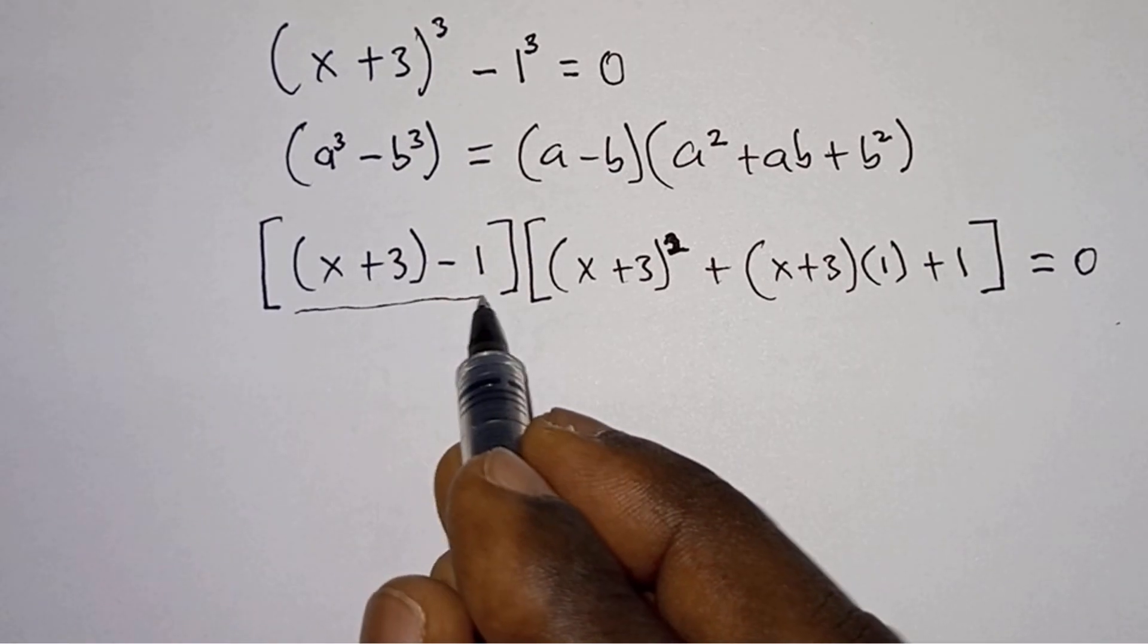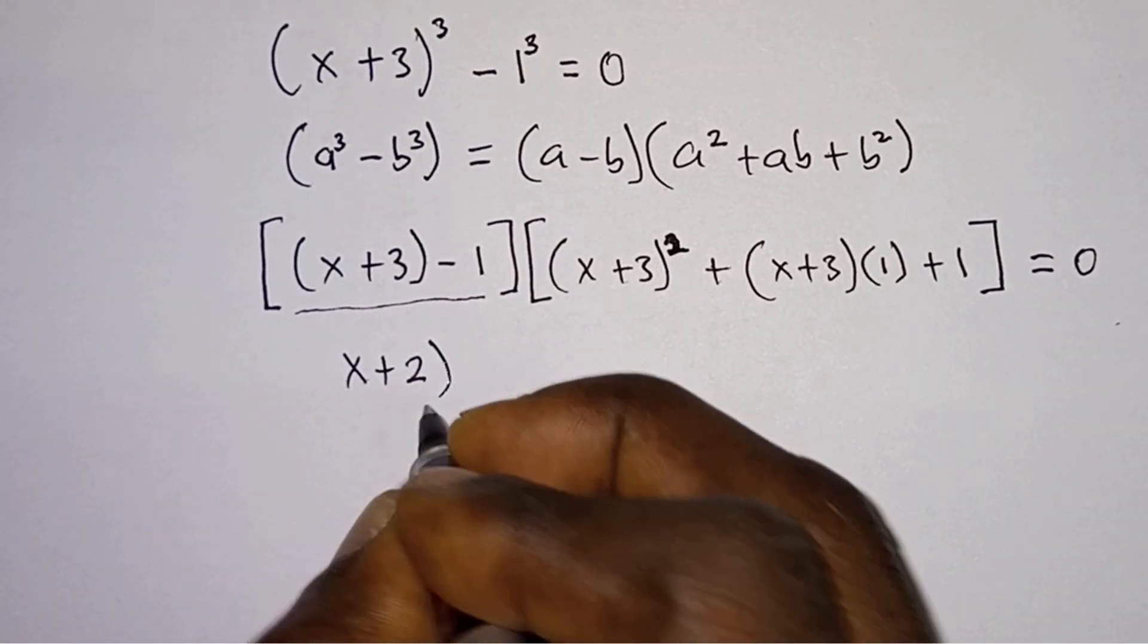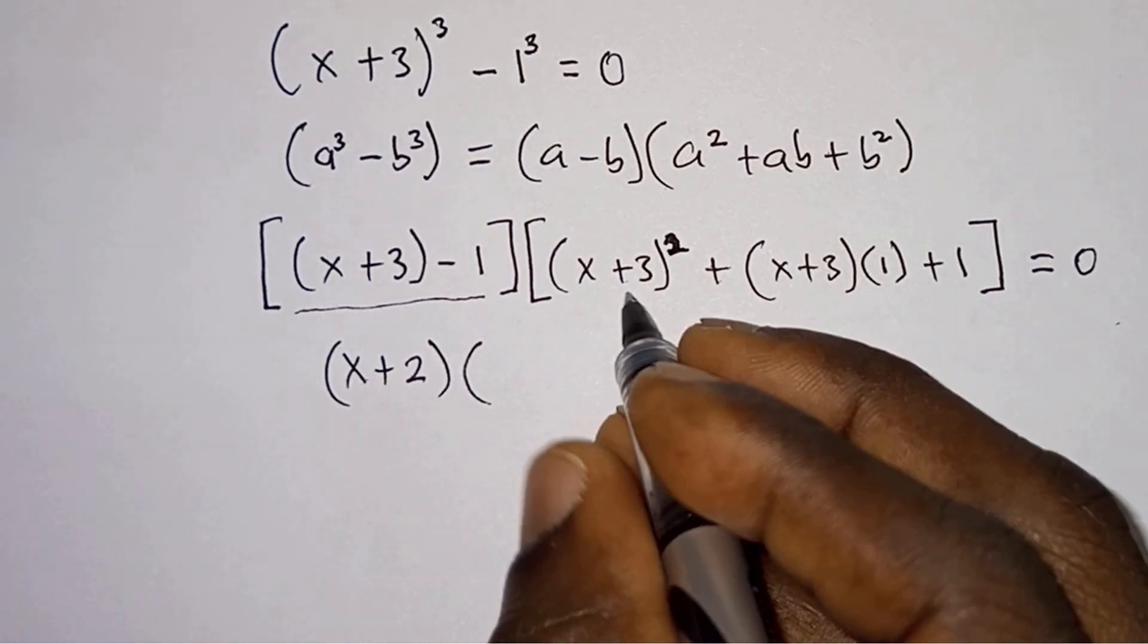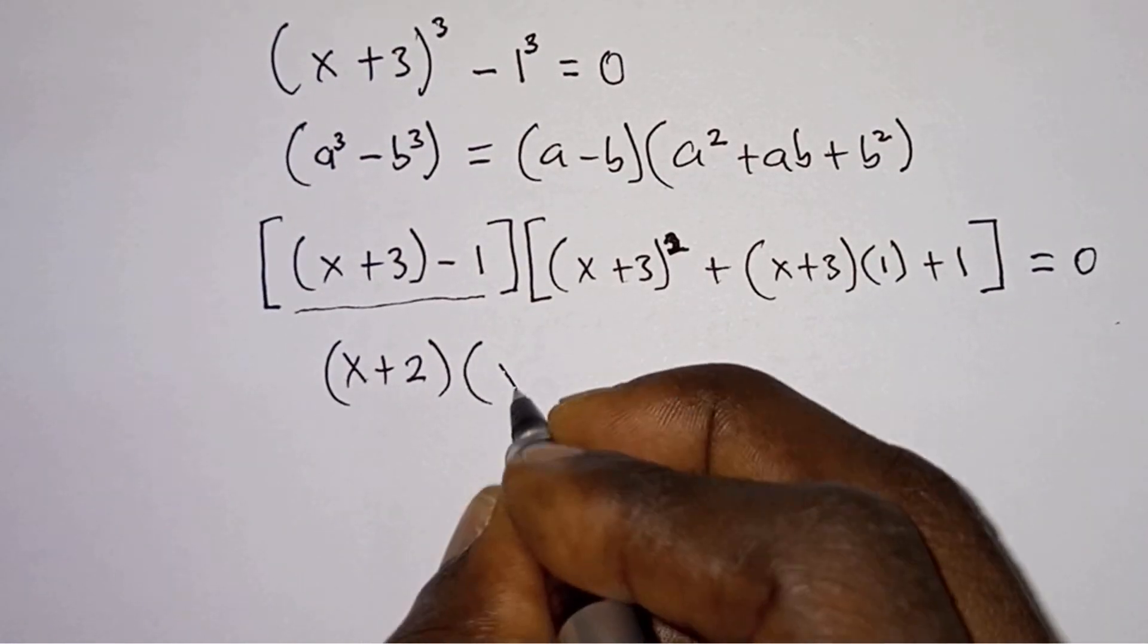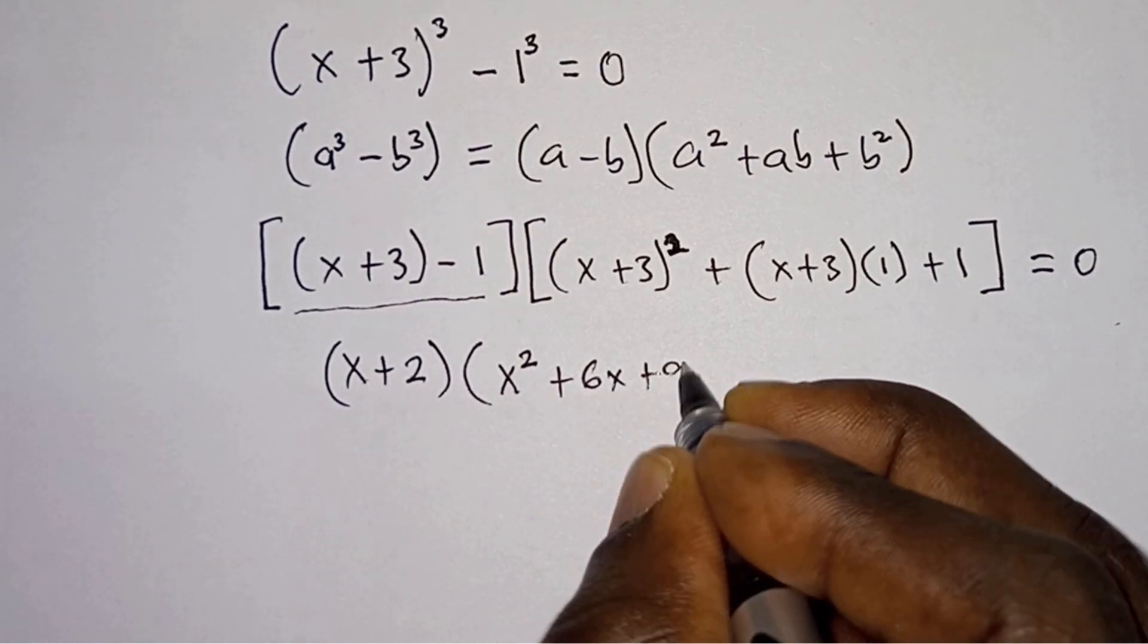Let's simplify this whole thing. First we're gonna have x plus 2. Then let's expand this one. We're gonna have x² plus 6x plus 9.